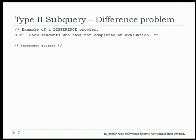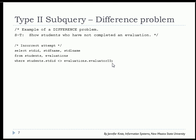Let's take a look at another type 2 subquery. This will be for what we refer to as a difference problem. We want to show students who have not completed an evaluation as an evaluator. Your initial take on this might be to try doing a comparison where student ID doesn't equal evaluator ID. But that doesn't work.